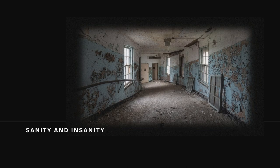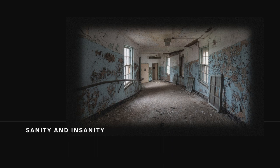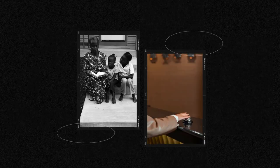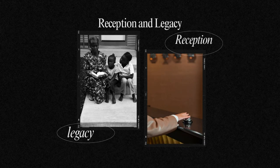Sanity and insanity: particularly through Darl's perspective, the novel examines the thin line between sanity and madness. Faulkner's narrative style is one of the most striking features of As I Lay Dying. The use of multiple narrators and stream-of-consciousness techniques creates a fragmented and subjective narrative, challenging readers to piece together the story from different perspectives. Upon its release, As I Lay Dying was praised for its originality and depth. It remains a cornerstone of American literature, studied for its complex narrative techniques and rich thematic content.